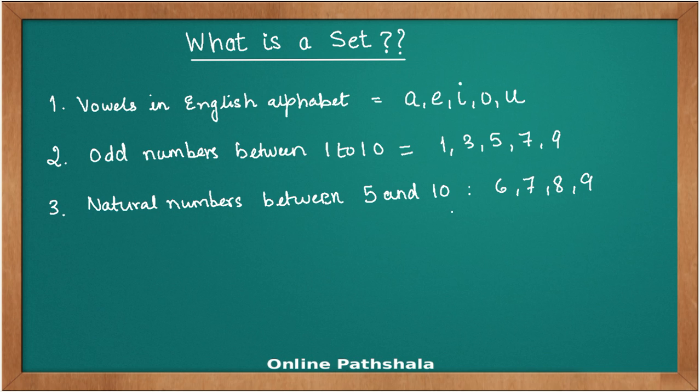We are assuming that 5 and 10 are not to be included. If you look at these three examples, let's look at the first example: vowels in the English alphabet. What we have here is a collection of letters from the English alphabet, and the characteristic of each of these letters is that it is a vowel. The second example is a collection of numbers, and the property of each of these is that it's an odd number between one to ten. The third example is a natural number between 5 and 10.